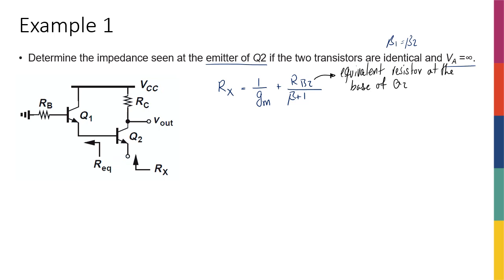So based on what I know, this is going to be 1 over Gm2, because we're talking about Q2, this transistor, plus Rb2 divided by beta plus 1. Now, what is Rb2? Rb2 is basically whatever resistance that I see at the base, which is this Req. So this is the equivalent resistor that I see at the base.